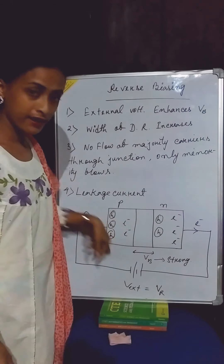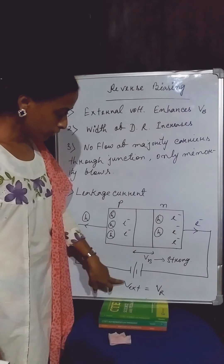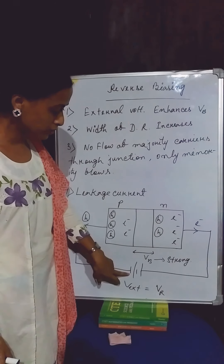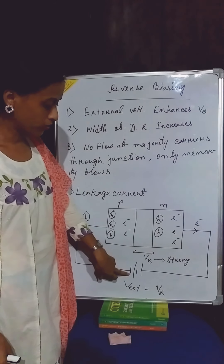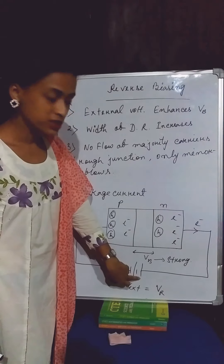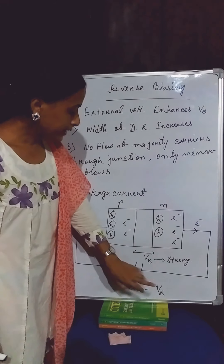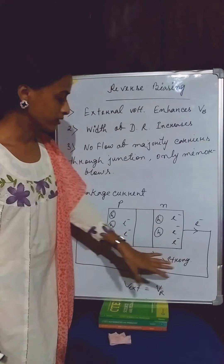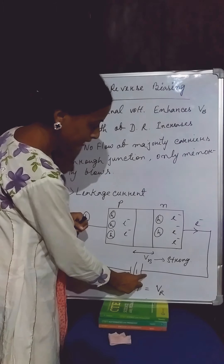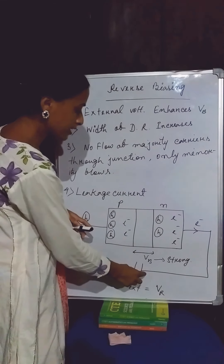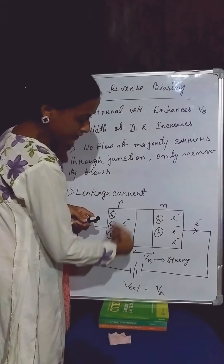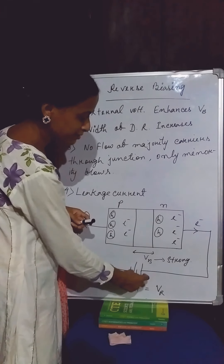Now let's see this figure. In this diagram, I am connecting the P-type section to an externally applied voltage in such a way that the P-section of the diode is connected to the negative terminal of the externally applied voltage, and the N-section of the diode is connected with the positive terminal of the externally applied voltage with the help of some external wires. So in this connection, the P-section and N-section are connected to the external voltage in a way that is completely opposite to the forward biasing connection.